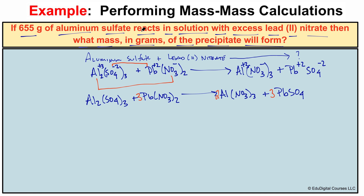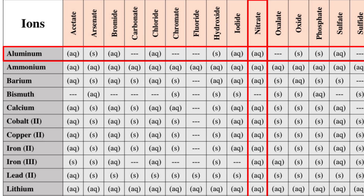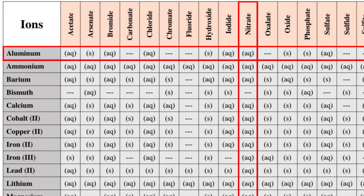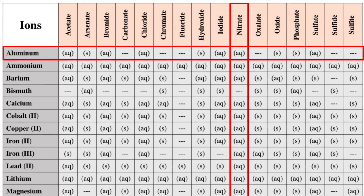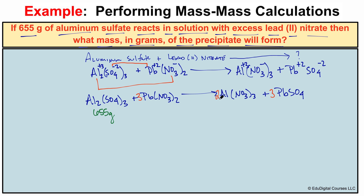Now we can start the stoichiometry process. In this problem we have 655 grams of aluminum sulfate, and we want to figure out the mass in grams of the precipitate that will form. We have to determine which of the two products is a precipitate, and we can do that by looking at a solubility table. Looking at that solubility table, we can see that aluminum nitrate is aqueous — it stays dissolved in water.